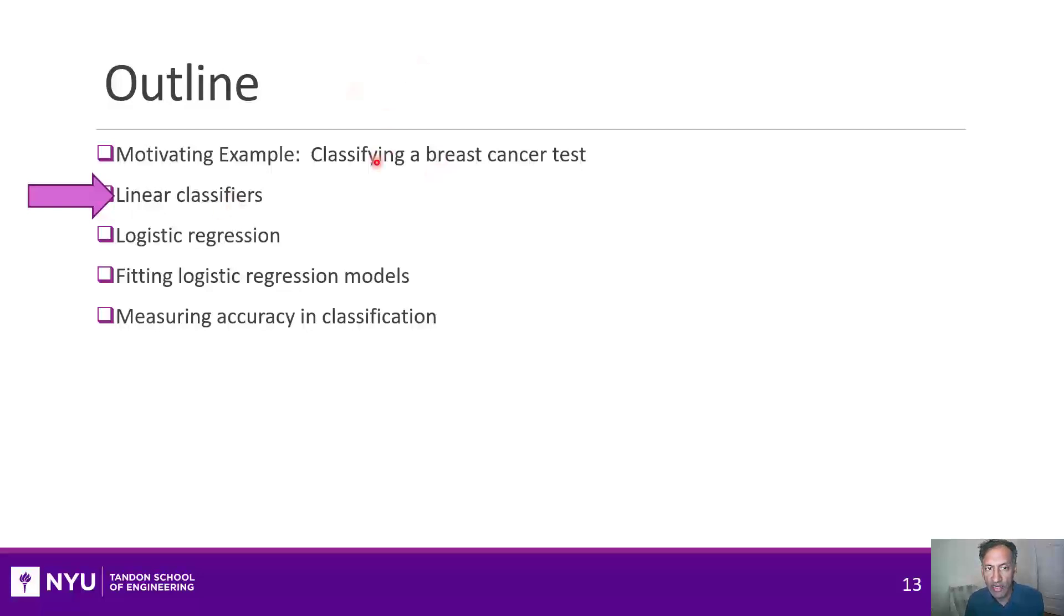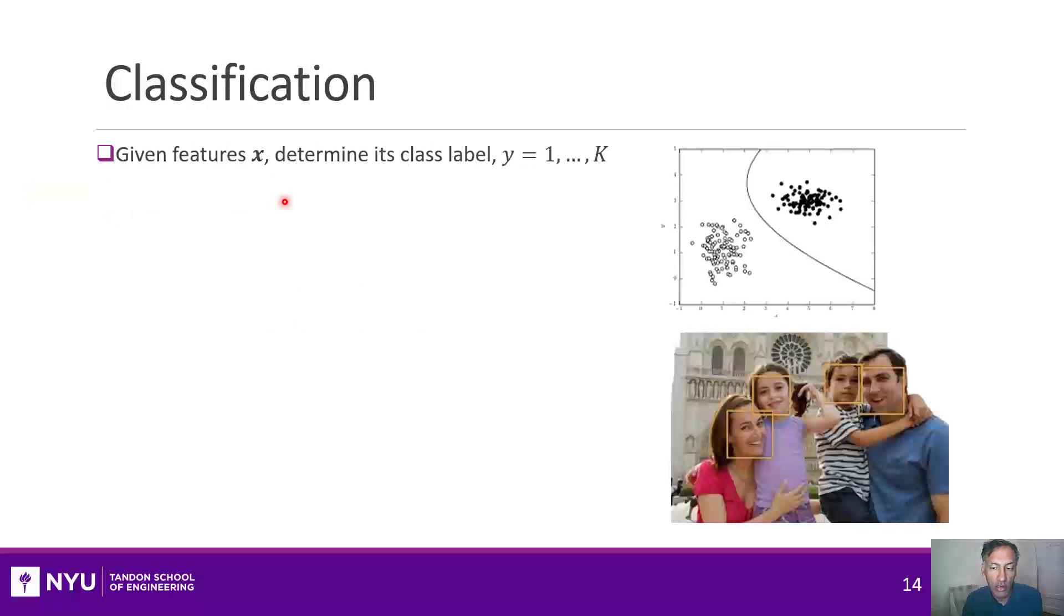Now that we've looked at our motivating example, which is to try to diagnose breast cancer from a sample, let's look at our first type of classifiers called linear classifiers. Before we do that though, let's just talk about what we mean by classification in general. As a recap, you're given a vector of features x. For example, in the breast cancer case, that would be the vector of 10 features of the sample. And then in general, you want to determine its class label, which we denote by y.